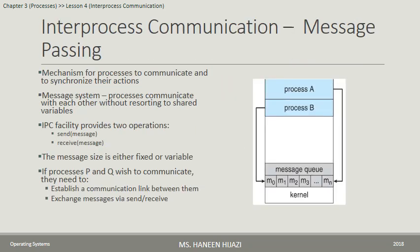Inter-Process Communication — Message Passing: In the message passing technique there is no shared memory between cooperating processes. Cooperating processes communicate through two operations: Send and Receive. This method is suitable for transferring small amounts of data, and it is easier to implement in a distributed system than shared memory. It is also better for multi-processor systems than shared memory because of the cache coherency problem.